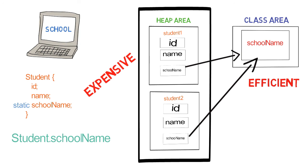Static is always accessed with the class name. So if you want to access school name, you say Student.schoolName — Student being the class name. Since static belongs to a class and not to an object, we access it with the class name. Whenever you are asked this question in an interview, don't forget to mention all these points — the places we can use static, why we use it, and how to access static variables and methods.